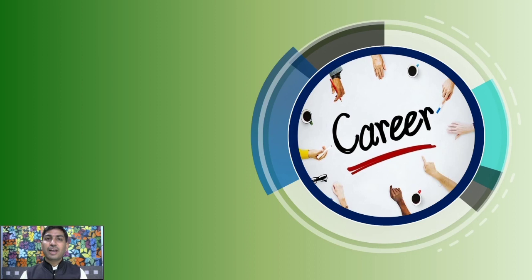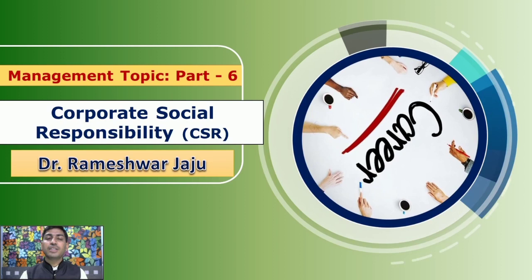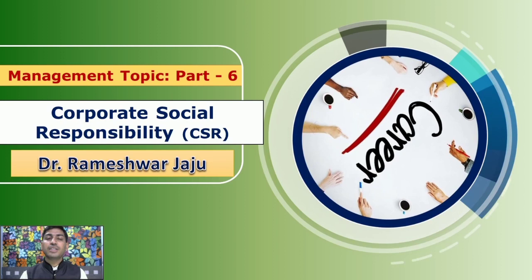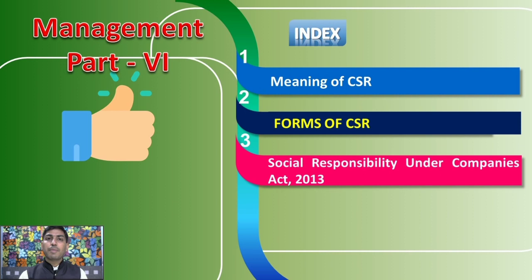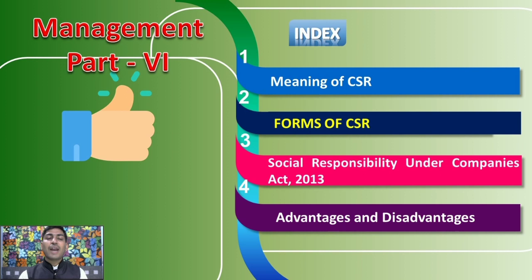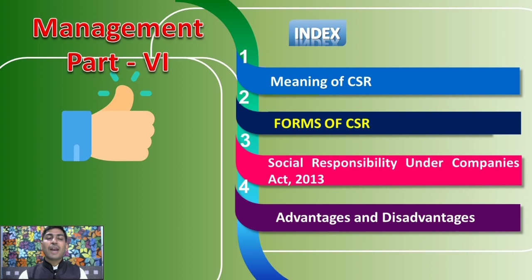Today we will see six topics typically for management. We will talk about the different types of Corporate Social Responsibility forms, functions, and the act for Corporate Social Responsibility. Specifically: the meaning of CSR, the four forms of CSR, Social Responsibility under Companies Act 2013, its implications, advantages and disadvantages of CSR, and finally the current position of CSR in India.